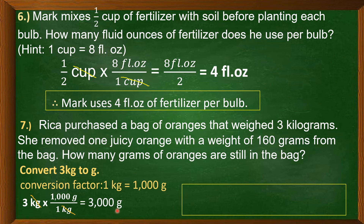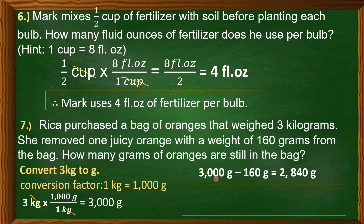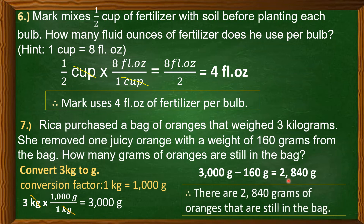Since Rika removed one orange weighing 160 grams, we subtract: 3,000 grams minus 160 grams equals 2,840 grams. Therefore, there are 2,840 grams of oranges still in the bag.